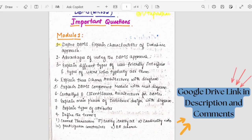The first question is to define DBMS and explain the characteristics. There are nearly six or seven characteristics of DBMS database approach. The second question is advantages of using DBMS. This is also a pretty easy question.